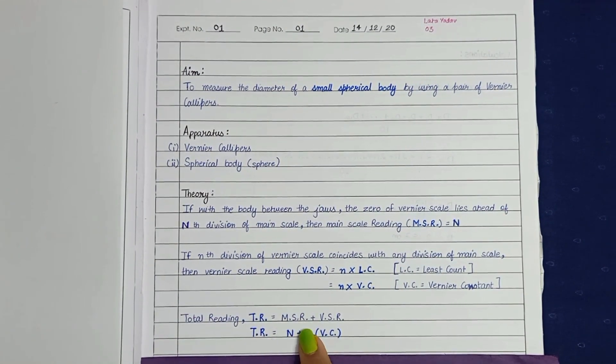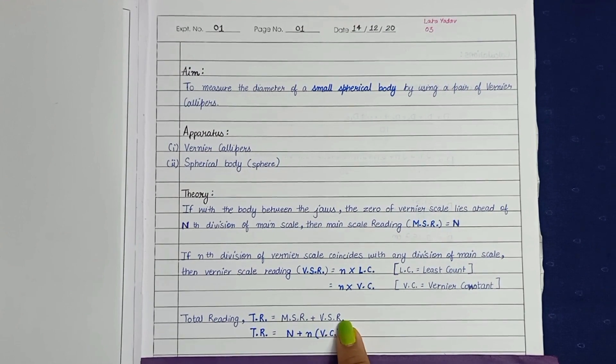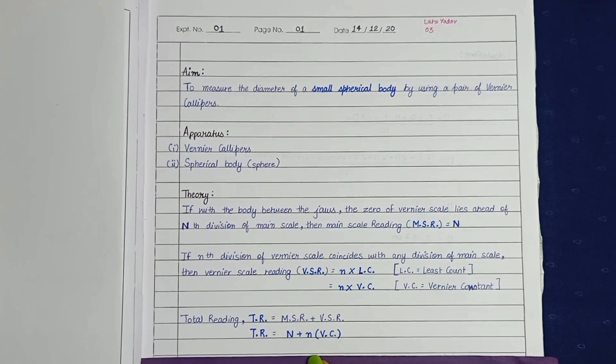Therefore, the total reading TR equals to MSR plus VSR. So we get the formula for total reading is N plus n into vernier constant.